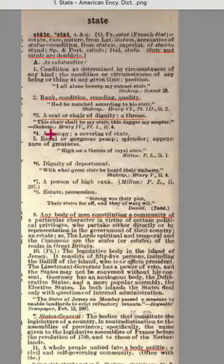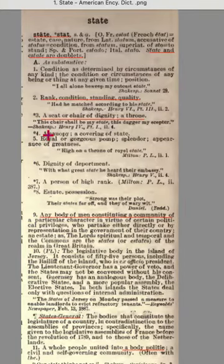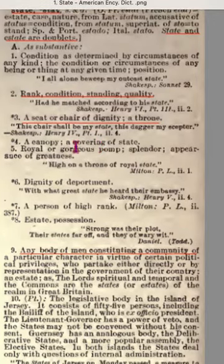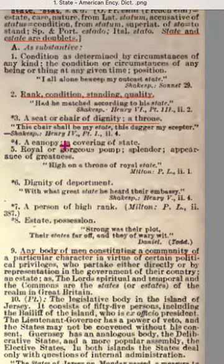Definition three: a seat or chair of dignity, a throne. So the seat of government is Washington, D.C. — that's the seat of the military government, the seat of the United States. The United States is the military government. I've covered seat, sit, sieve, sip, zip, and all these things in another video — it's a play on words. Quote from Shakespeare's Henry IV: 'This chair shall be my estate, this dagger my scepter.'